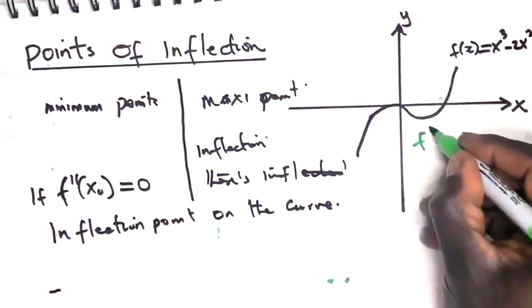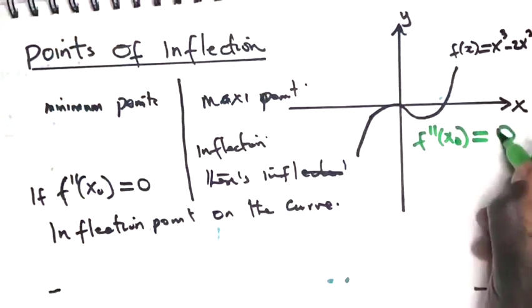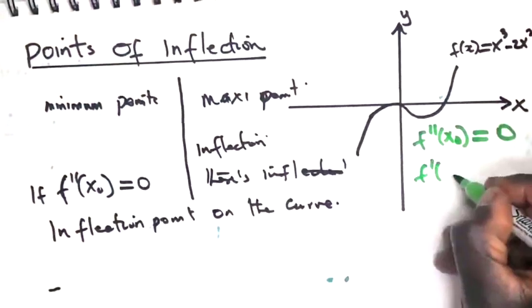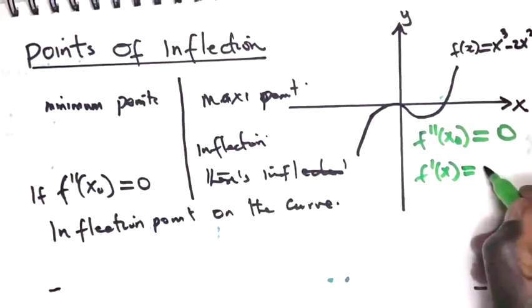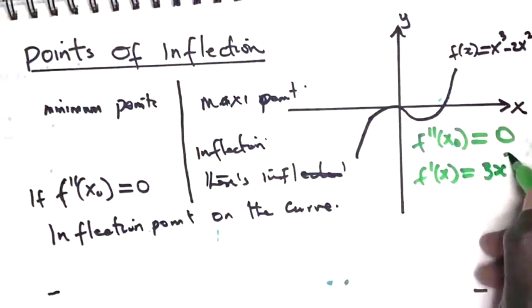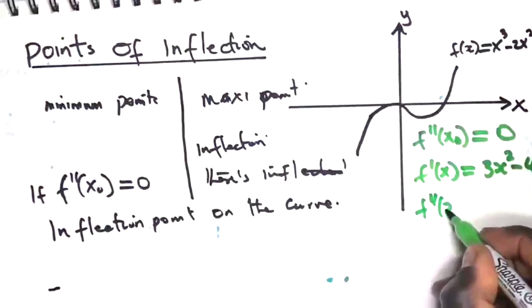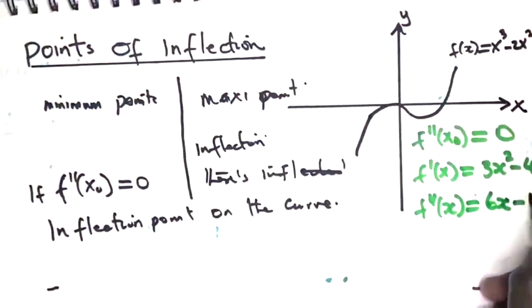So all we have to do is get the double prime of x at that point and equate it to zero. So let's get the derivative. F prime of x is 3x squared minus 4x. Now the double prime is equal to 6x minus 4.